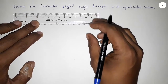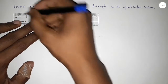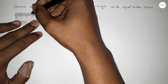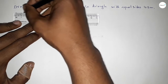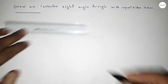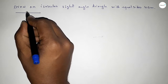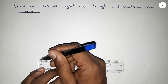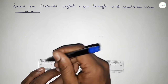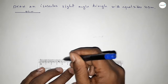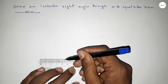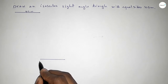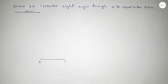First of all, we have to draw a line of length 4.5 centimeters. This is 4.5 centimeters. Now taking point B on one end and point C on the other end of this line.